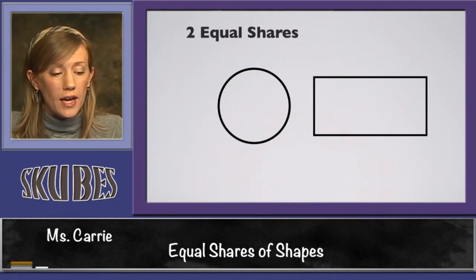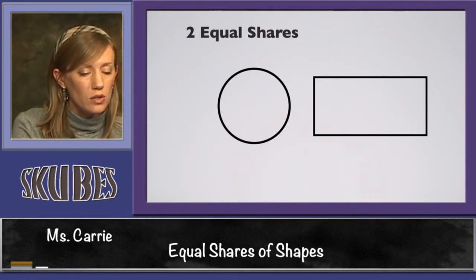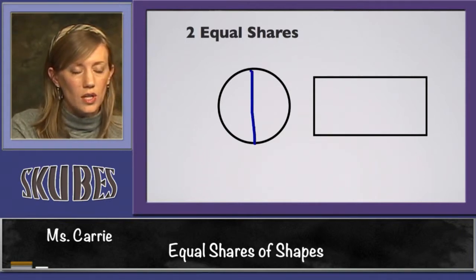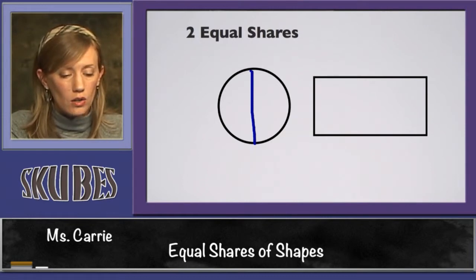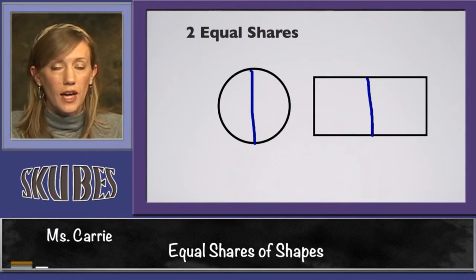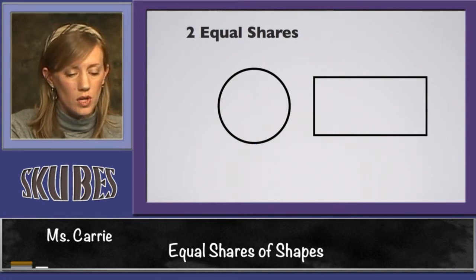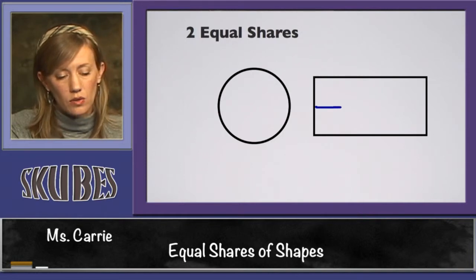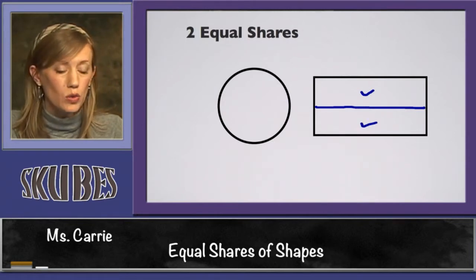We can divide a circle or we could divide a rectangle into two equal shares. We could divide the circle in half — we have two equal shares. And for our rectangle, we could also draw a line down the middle and divide it into two equal shares. We could also cut the rectangle this way, and this piece on the top and this piece on the bottom are equal as well.